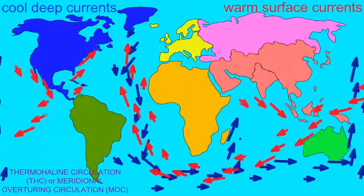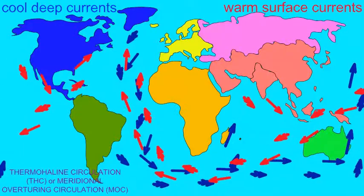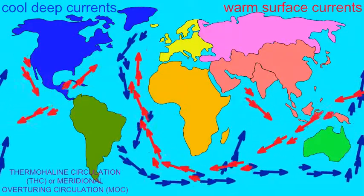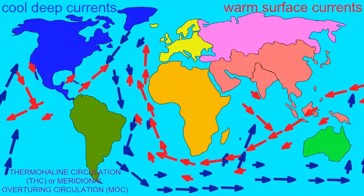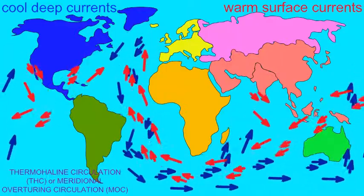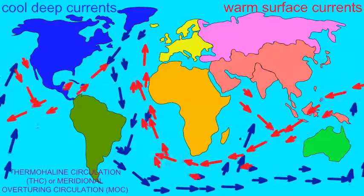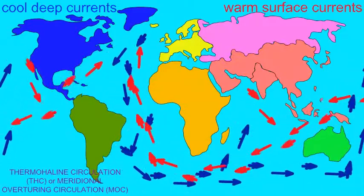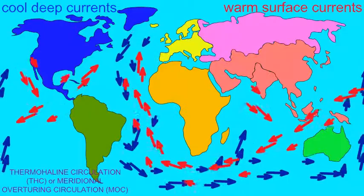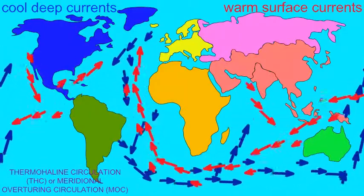These currents form a global system of water movement, which is extremely important for the global climate, as temperatures are moderated throughout the globe, with cooler waters being moved towards the equator, and warmer waters going northward, where they can help to warm the poles.